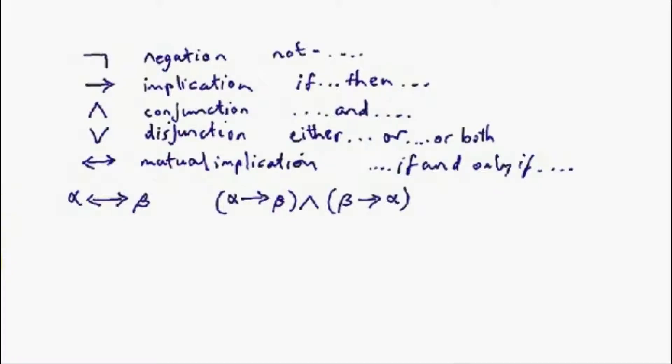I finished the last presentation with a slide in which we introduced these new connectives: the upside-down V of conjunction, the V of disjunction, and the double-headed arrow of mutual implication, by definition in terms of these two primitive connectives of negation and implication. And on the basis of the way in which those new connectives were defined,